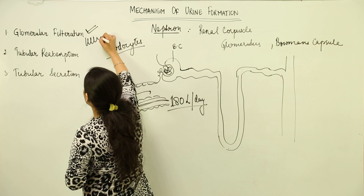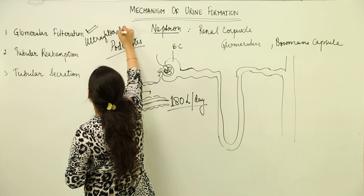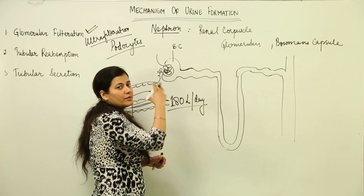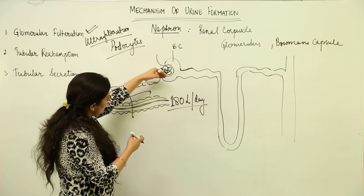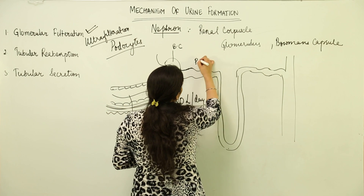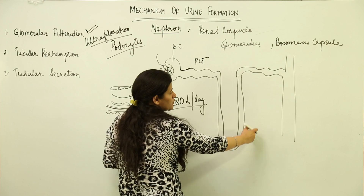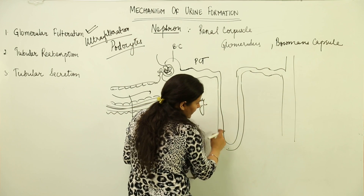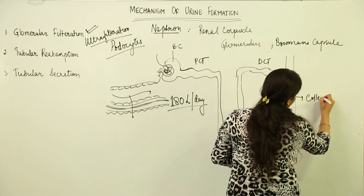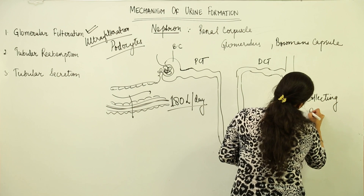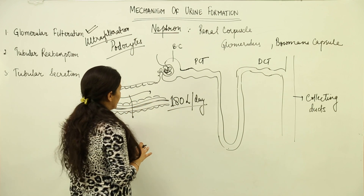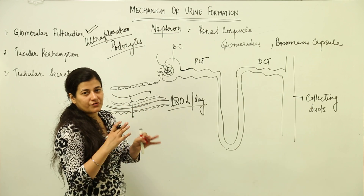The first step of the mechanism of urine formation is glomerular filtration, also known as ultrafiltration, which takes place in the Malpighian body or renal corpuscle. Here, the glomerulus — the tuft of capillaries — brings blood and through podocytes throws secretions into the Bowman's capsule. From there, fluid enters the proximal convoluted tubule, then the descending and ascending limbs of the loop of Henle, then the distal convoluted tubule, then the collecting duct, and finally the ureters and urinary bladder.